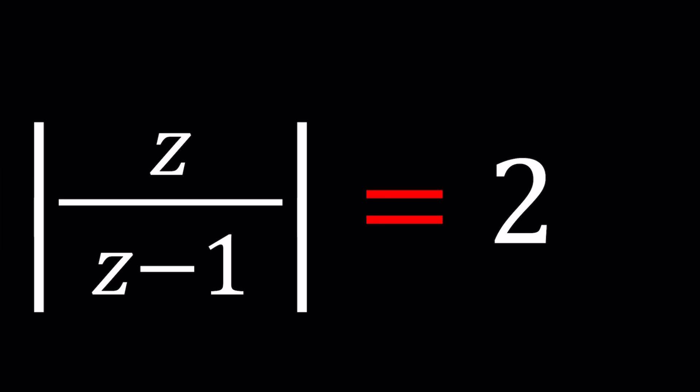We have the absolute value of z over z minus 1 equals 2, and we're going to try to find a set of z values that satisfies this equation, which means we're trying to find the locus.